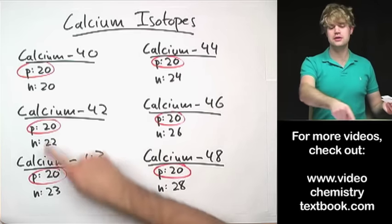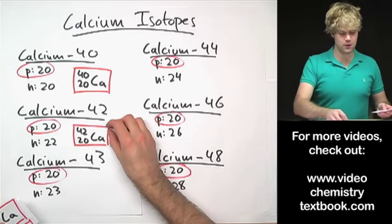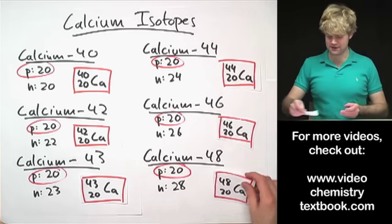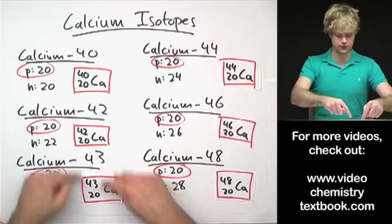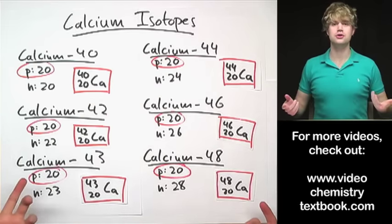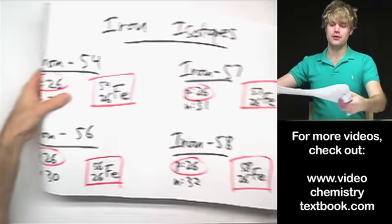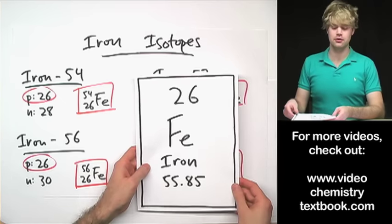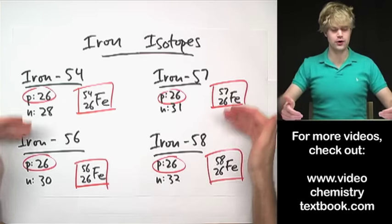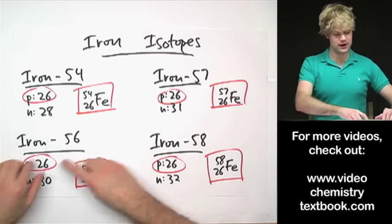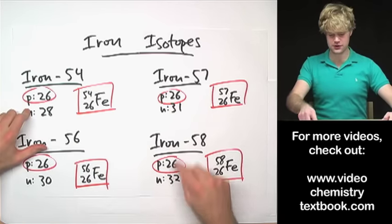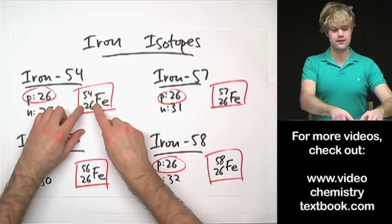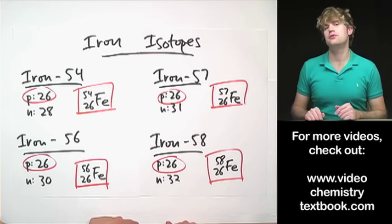Just like we did with carbon, we can write all of these calcium isotopes in isotope notation, where we have the mass number here up at the top and the atomic number down at the bottom. You'll see they all have the same atomic number of 20, but different mass numbers, the sum of protons and neutrons. The same is true for iron, just to give you another example. Iron has 26 protons in its nucleus, an atomic number of 26, and there are four known isotopes of iron, all of which have 26 protons in the nucleus, but they all have varying numbers of neutrons. You add these together to get the mass number, and then you can write it in isotope notation with a mass number up here, and the atomic number down here.